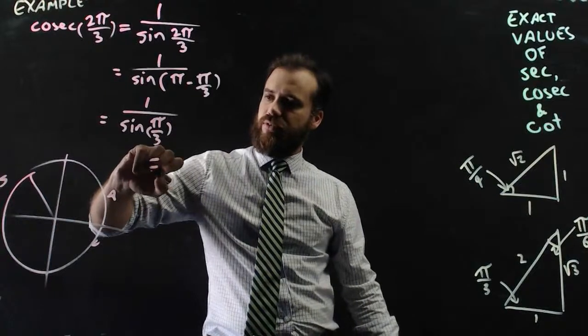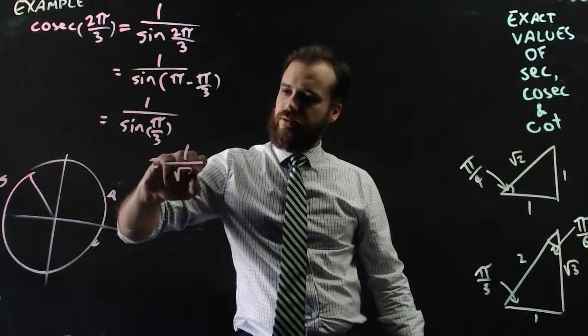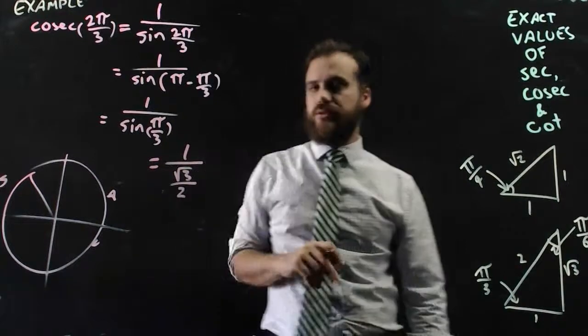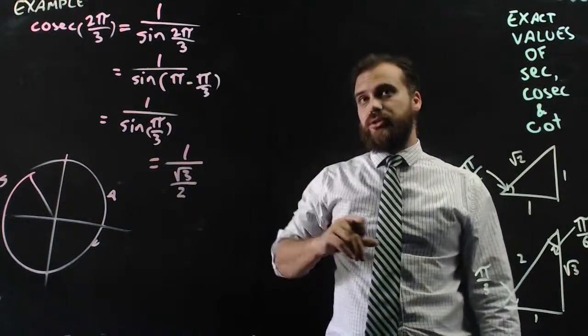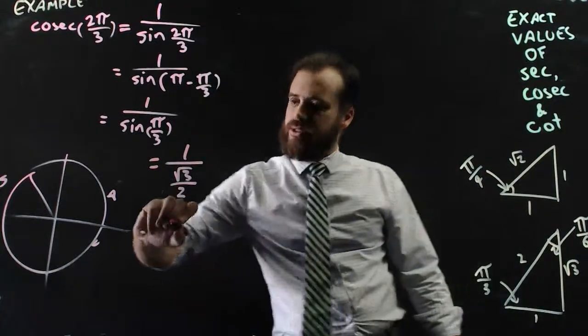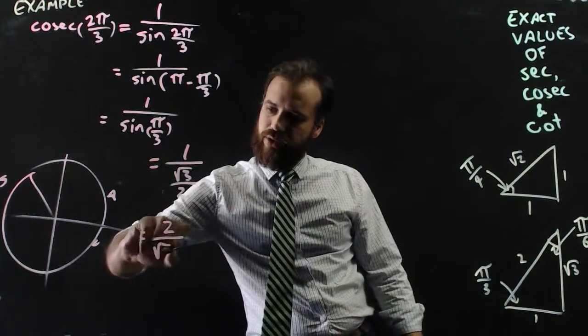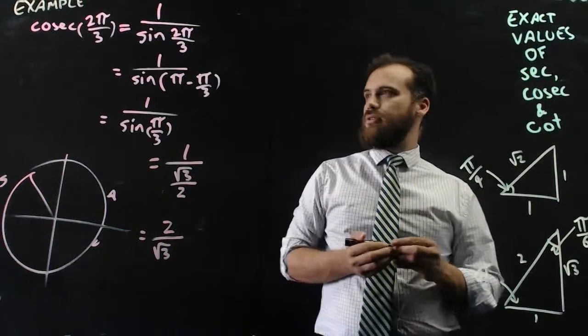I'll just move over here a little bit. 1 over √3/2. Now 1 over √3/2 is just the reciprocal of the denominator, so it's 2 over √3.